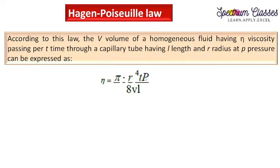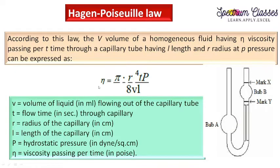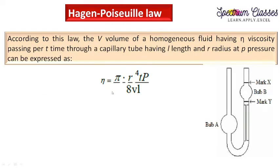Here, V is the volume of liquid in ml flowing out of the capillary tube, t is the flow time through the capillary in seconds, r is the radius of the capillary in centimeters, l is the length of the capillary in centimeters, p is the hydrostatic pressure — which we will discuss in the coming slides — and eta is the viscosity in centipoise.